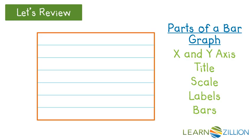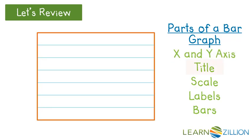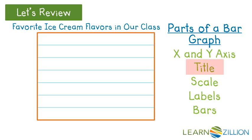First we have the x and y axis. The x axis goes horizontally — horizontally means left and right, that is going horizontal, along the horizon, side to side. The y axis goes up and down, that is vertically.